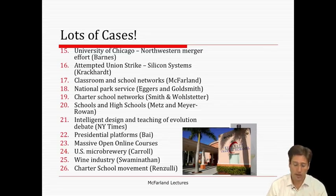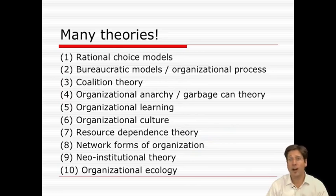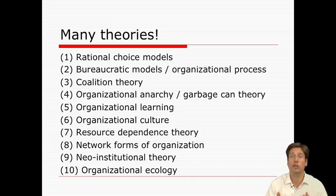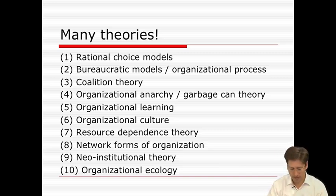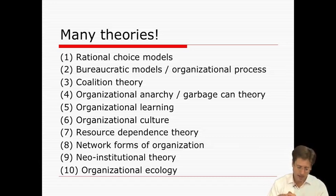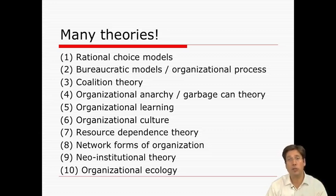We covered a lot of theories — 10 in all. Just to remind you: we had rational choice models, bureaucratic models that reflected organizational processes and rule following, coalition theory, organizational anarchy or garbage can theory, organizational learning, organizational culture, resource dependence theory, network forms of organization, new institutional theory, and organizational ecology. Now let's spend a little more time reviewing each one so that you walk away with a sense of the core features of each.